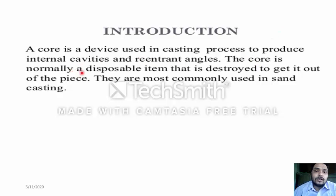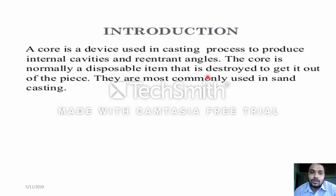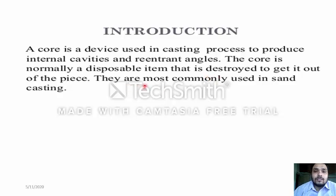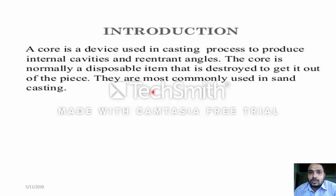The core is normally a disposable item that is destroyed to get it out of the piece. Core is a disposable type which comes out after casting is completed. You can put out the core from the casting and you can break the core after the casting is completed. They are most commonly used in sand casting.